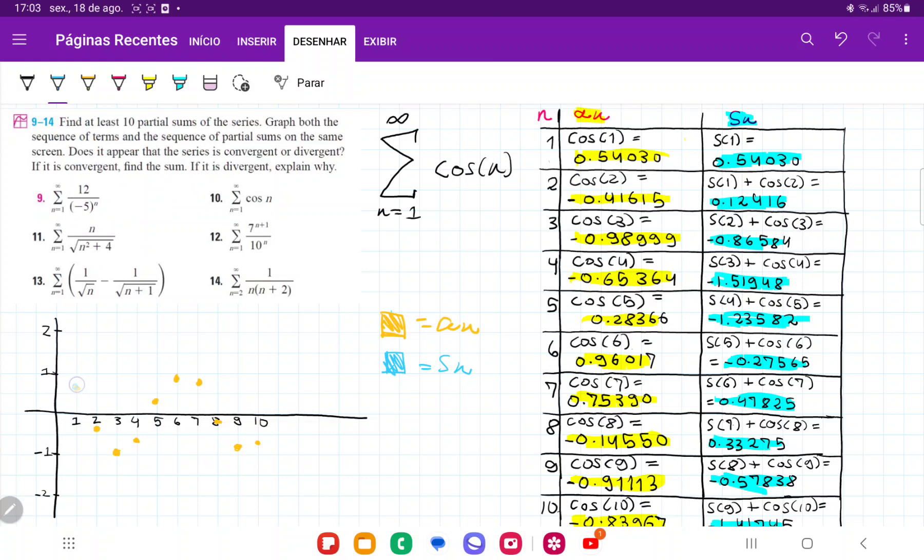So the first one, it's still at the same point, right? But then the second one, it goes to 0.12, so 0.12, it is about here. And then we have minus 0.86, so about somewhere like so. And then minus 1.519, so about here. And then we have minus 1.23, so like so.